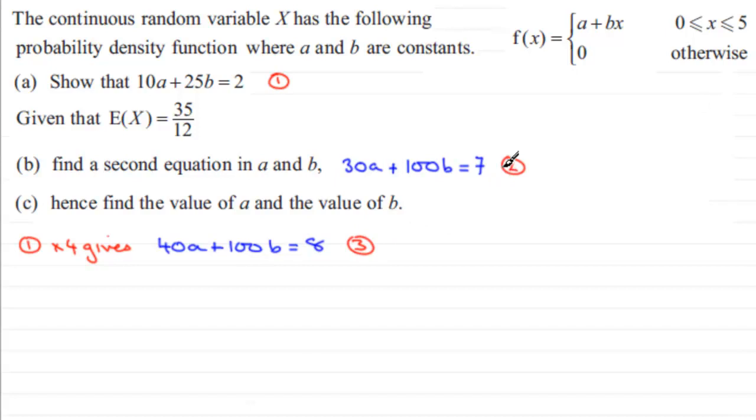So I'm now going to work with 2 and 3. So if I was to do equation 3 minus equation 2, what's that going to give us? Well, we've got 40A minus 30A so that's going to be 10A. And then 100B minus 100B, well that's zero. And then we've got 8 take away 7 which is 1.